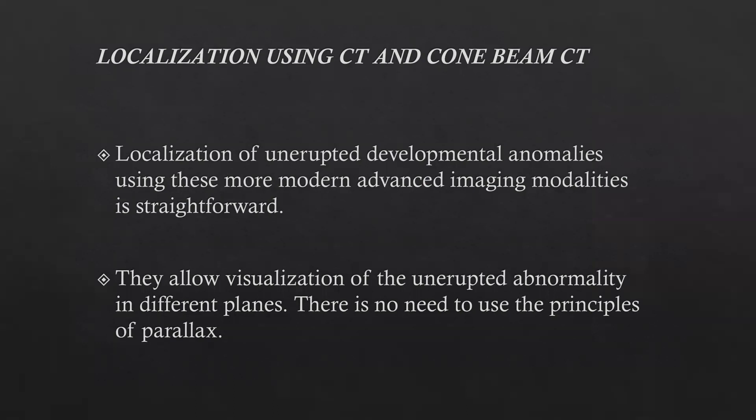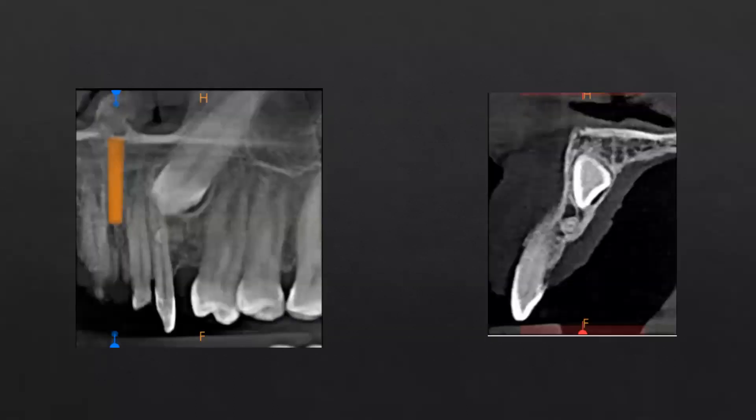Now there is localization using CT and cone beam CT. This is the most direct method; it does not rely on the principle of parallax, has no superimposition or magnification, and gives a direct idea of where the object is located. It helps in localization of unerupted teeth and developmental anomalies. We can visualize these abnormalities in different planes directly. For example, an impacted canine seen between the lateral incisor and premolar in a regular radiograph can have its exact buccolingual position determined by taking different CBCT slices.